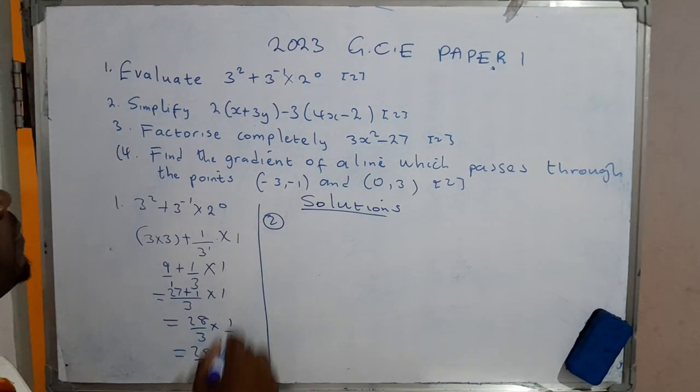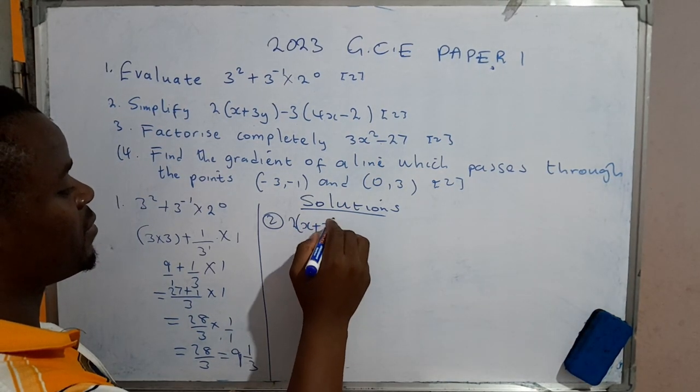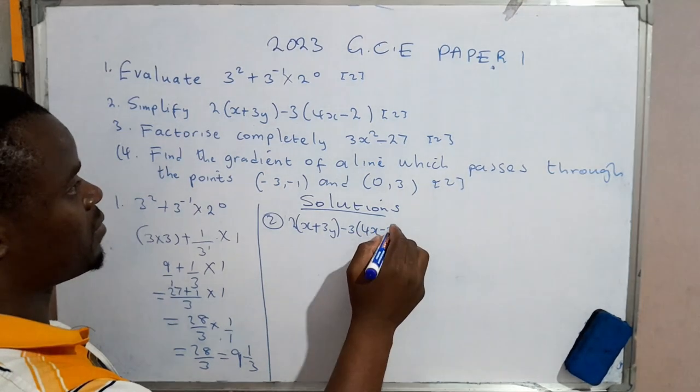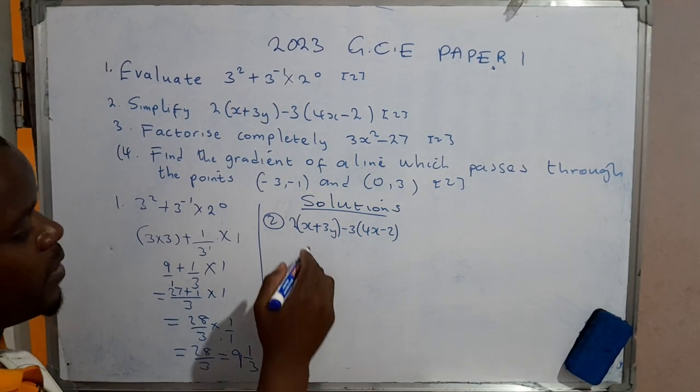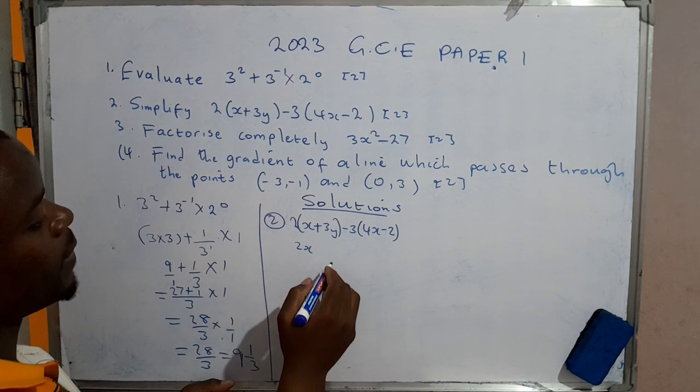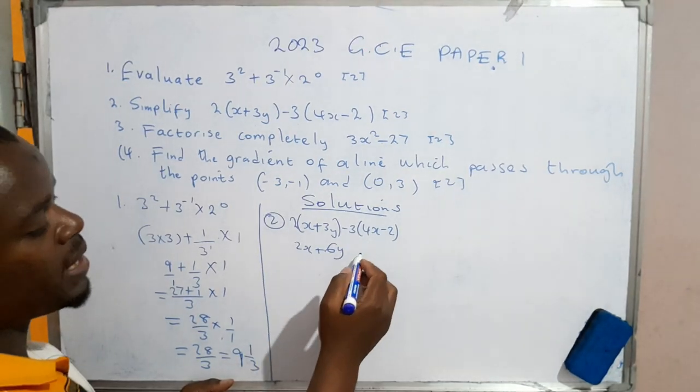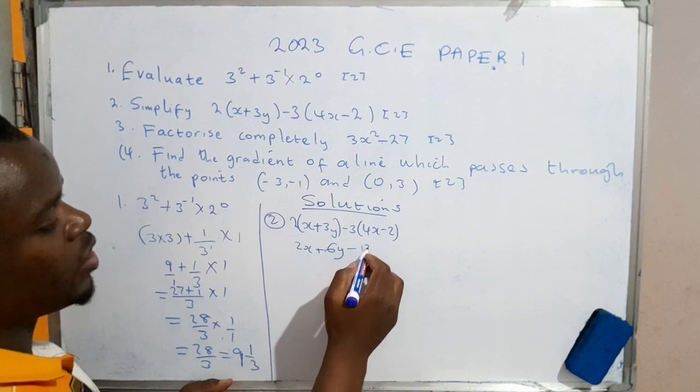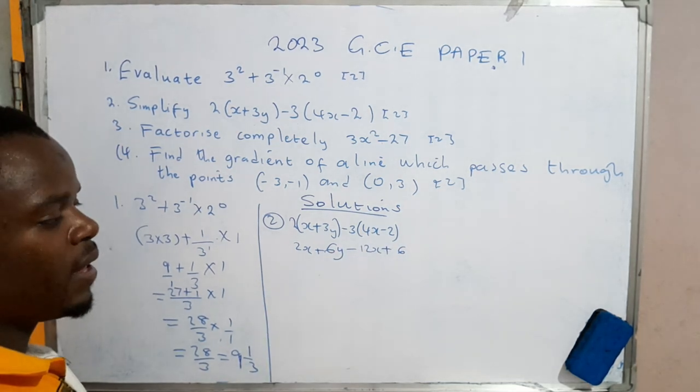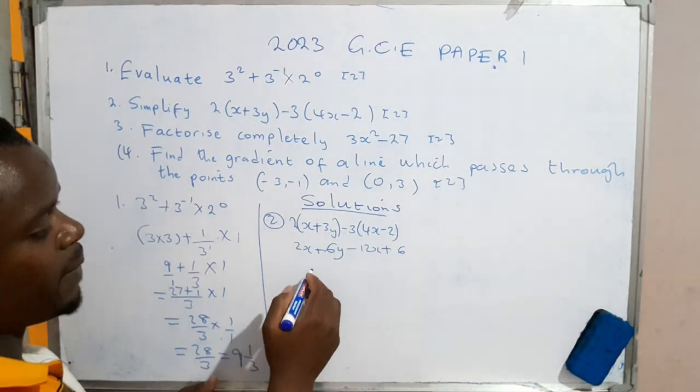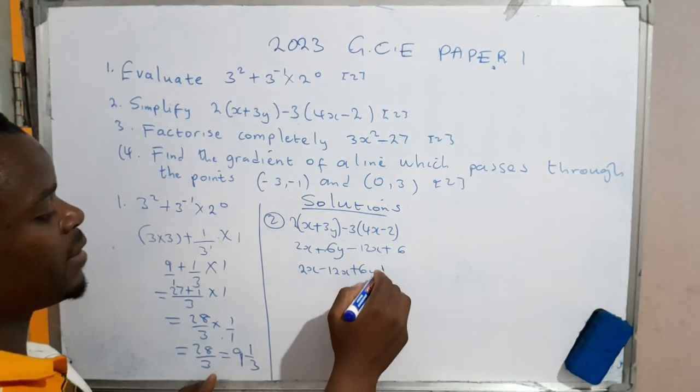We move on to number two, which says simplify 2(x+3y) - 3(4x-2) + 6. The first rule is you have to expand the brackets. 2 times x gives us 2x, plus 2 times 3y gives us 6y. Then multiply: 3 times 4x gives us minus 12x. Negative times negative, that's plus: 3 times 2 is 6.